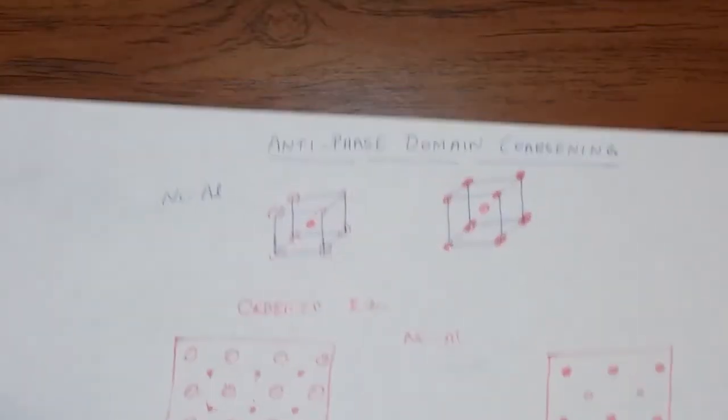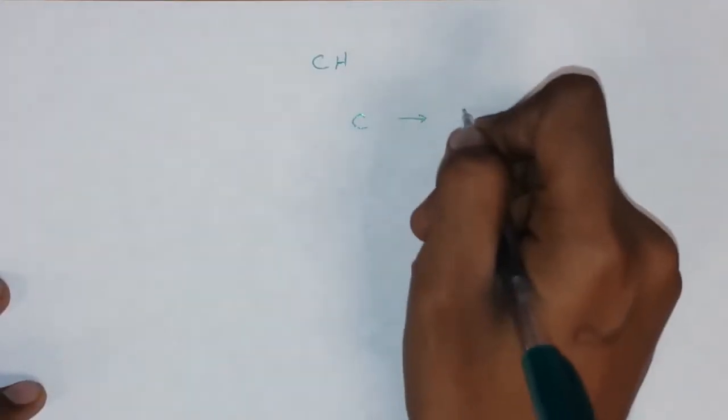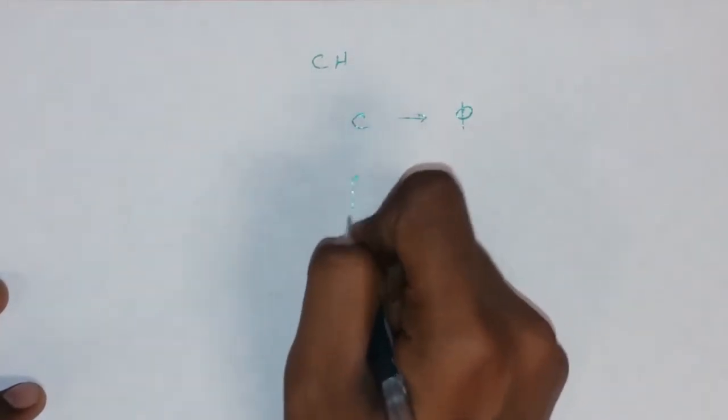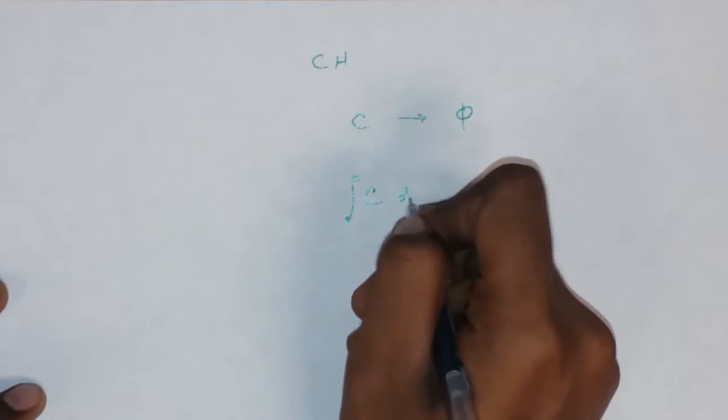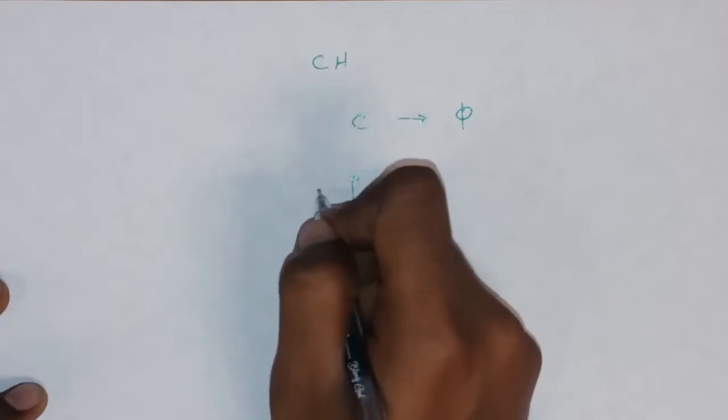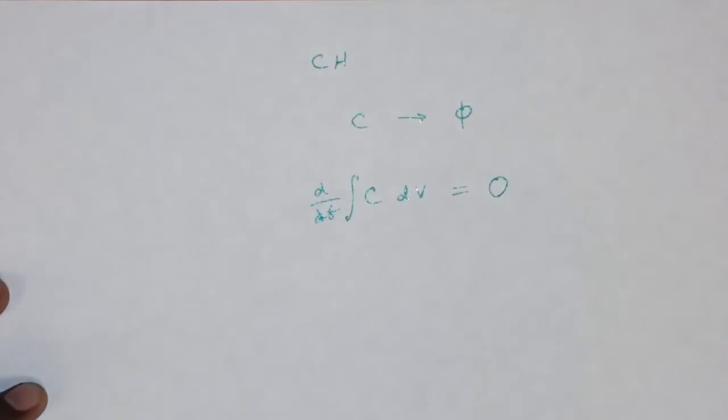Now, moving on. We need to recognize the fact that antiphase domains do not follow the Kahn-Halyard equation. Because in the Kahn-Halyard equation, composition is what is defined as the order parameter. So the composition is what represents the phi. And the composition in the Kahn-Halyard equation over a unit of area when differentiated with respect to time is going to be zero. Because the overall composition of the system doesn't change.